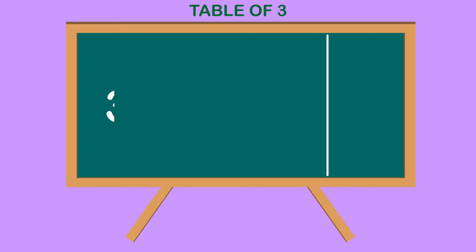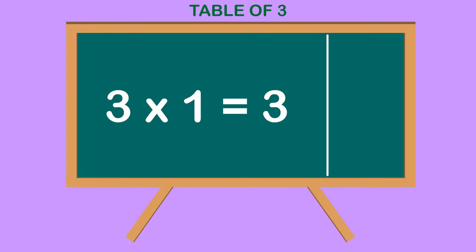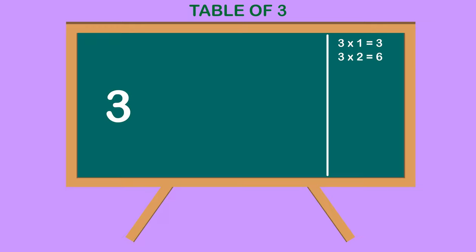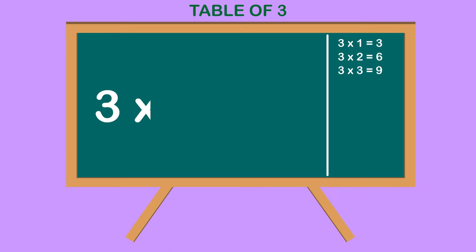Table of 3. 3 1s are 3, 3 2s are 6, 3 3s are 9, 3 4s are 12.